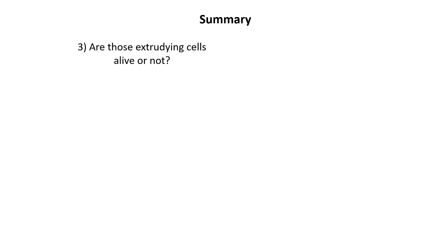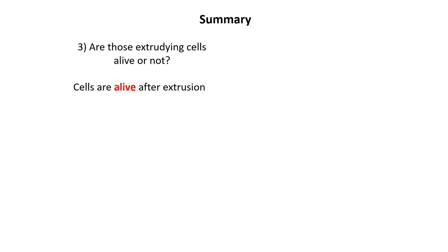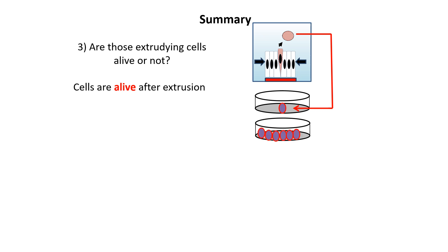They then study whether the extruded cells are alive. They show that cells are alive after extrusion: they take the cells that have been extruded from the tissue culture, place them in a petri dish under growth conditions, and show that those cells keep growing. In other words, the cells were alive when they were extruded.